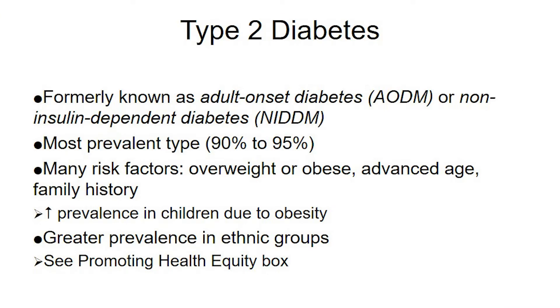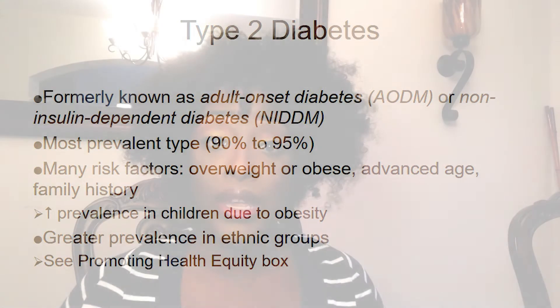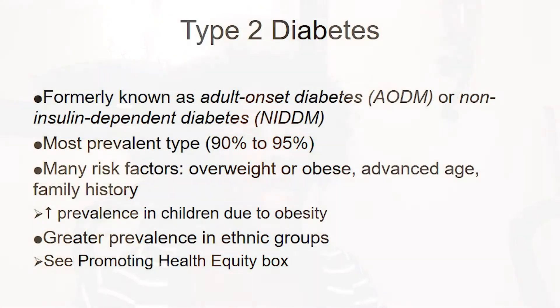Risk factors for Type 2 include being obese or overweight, advanced age, and family history. There's also increasing prevalence in children due to obesity. It used to be that children with diabetes were Type 1, born with some kind of autoimmune disorder. But now, in the age of fast food, childhood obesity is rising, and along with that childhood obesity comes diabetes.